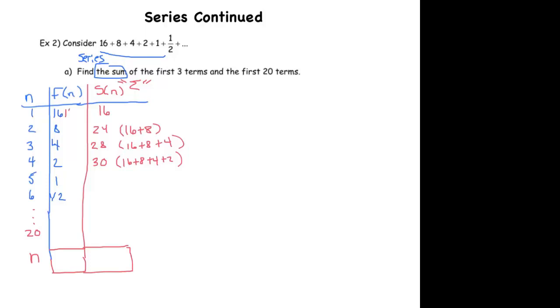So that suggests that this 16 is really like 16 times a half zero times. Sorry, that's very sloppy. This is 16 times a half one time. This 4 is 16 times a half two times. That's 16 times a half three times.